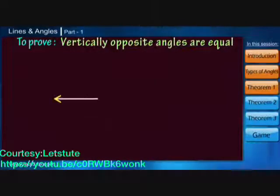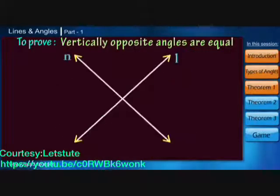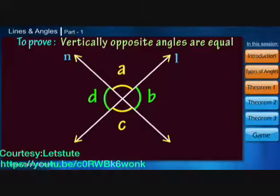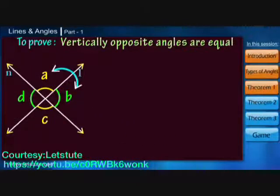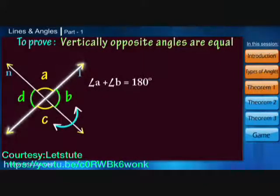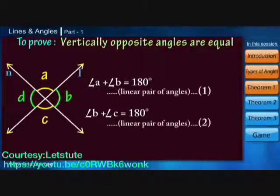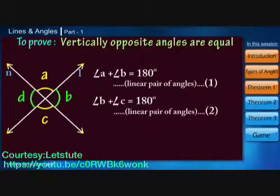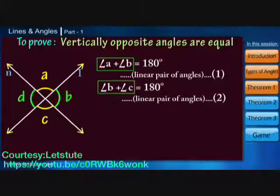Suppose there are lines L and M intersecting each other and forming vertically opposite angles. We can see that angle A plus angle B equals 180 degrees, and angle B plus angle C also equals 180 degrees. The reason for both is the linear pair of angles. Since the right-hand sides are equal, we can say the left-hand sides are also equal.